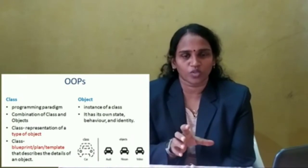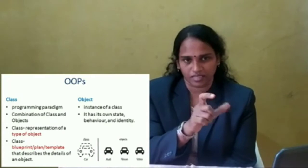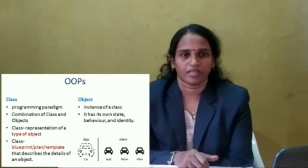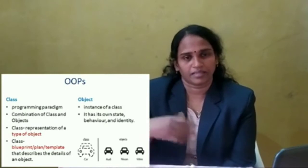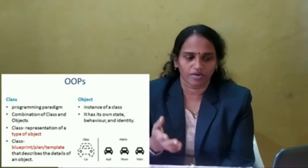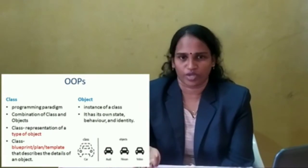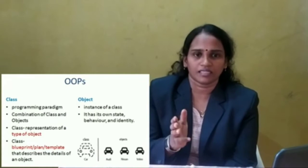We are going to assemble one car — here car is the class. We are going to assemble any type of car. It may be an Audi car, Nissan, Volvo, or Toyota. So here the class is car, and the object may be Audi, Volvo, or Toyota.